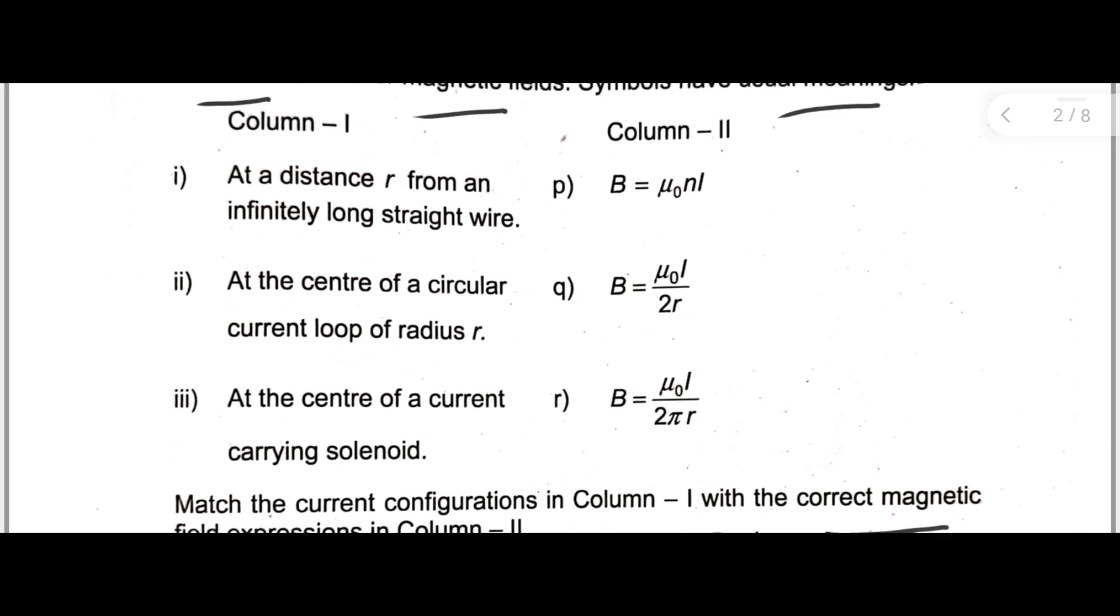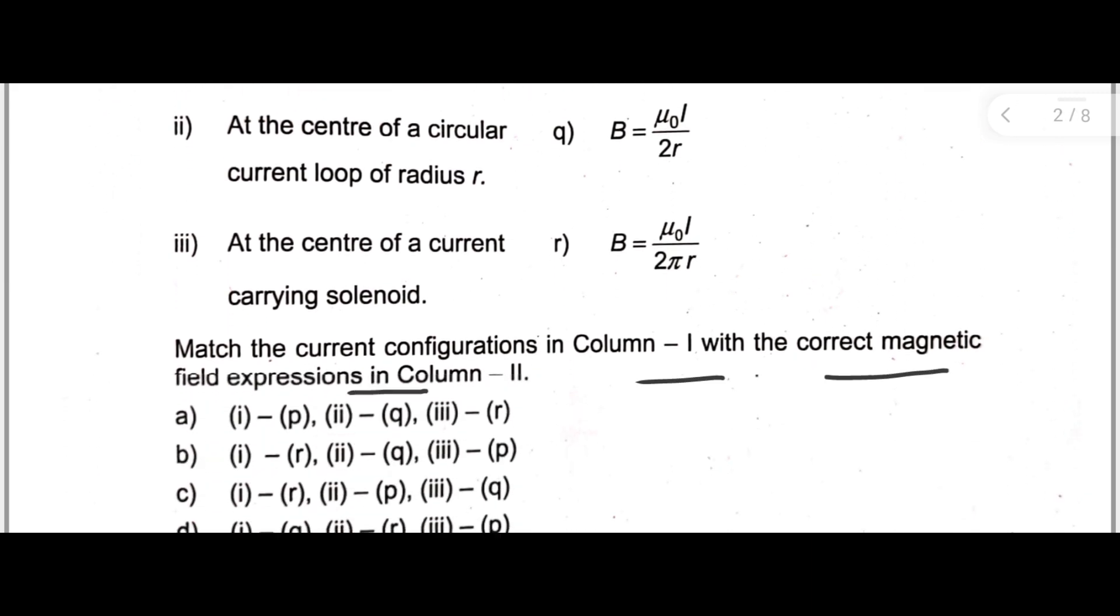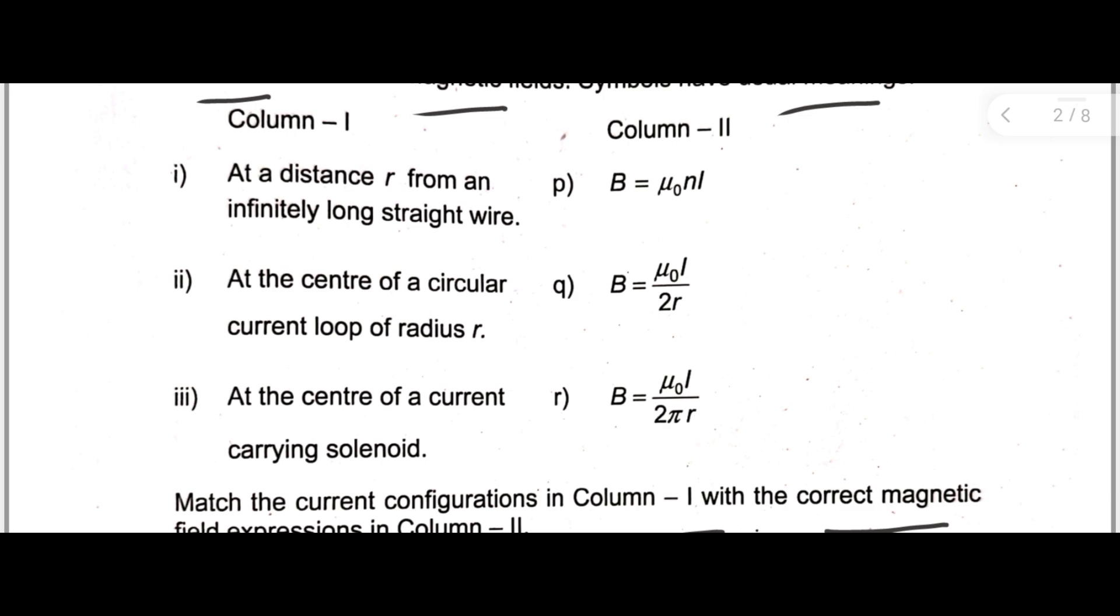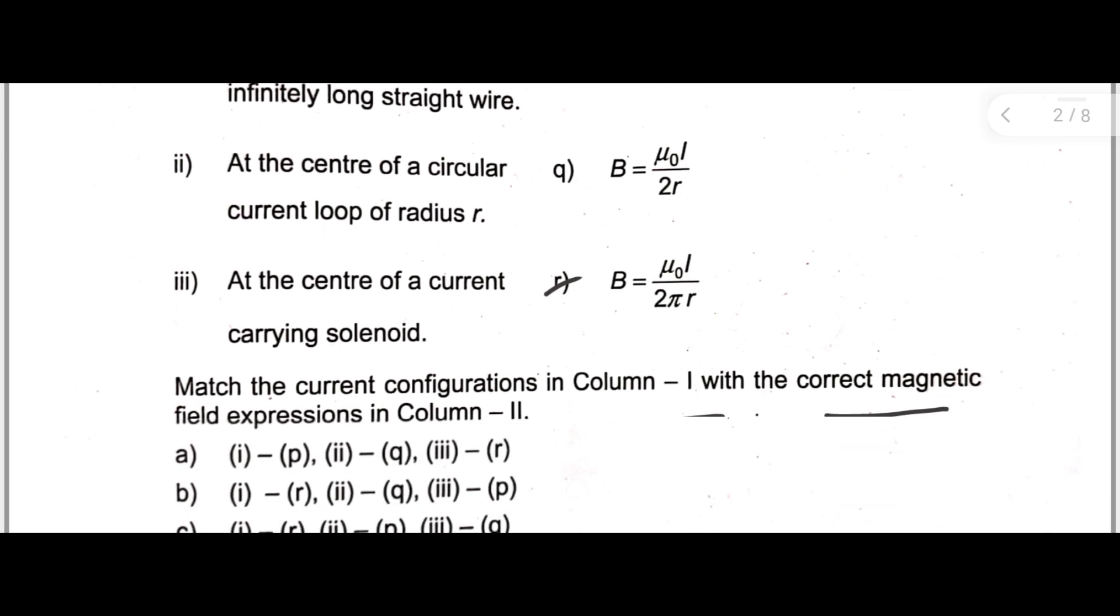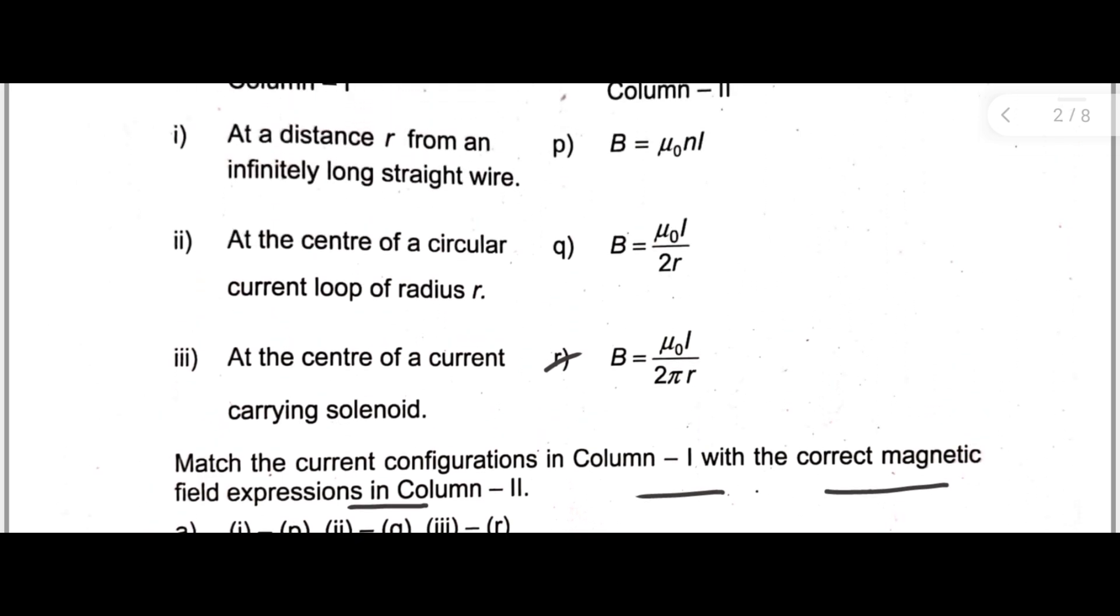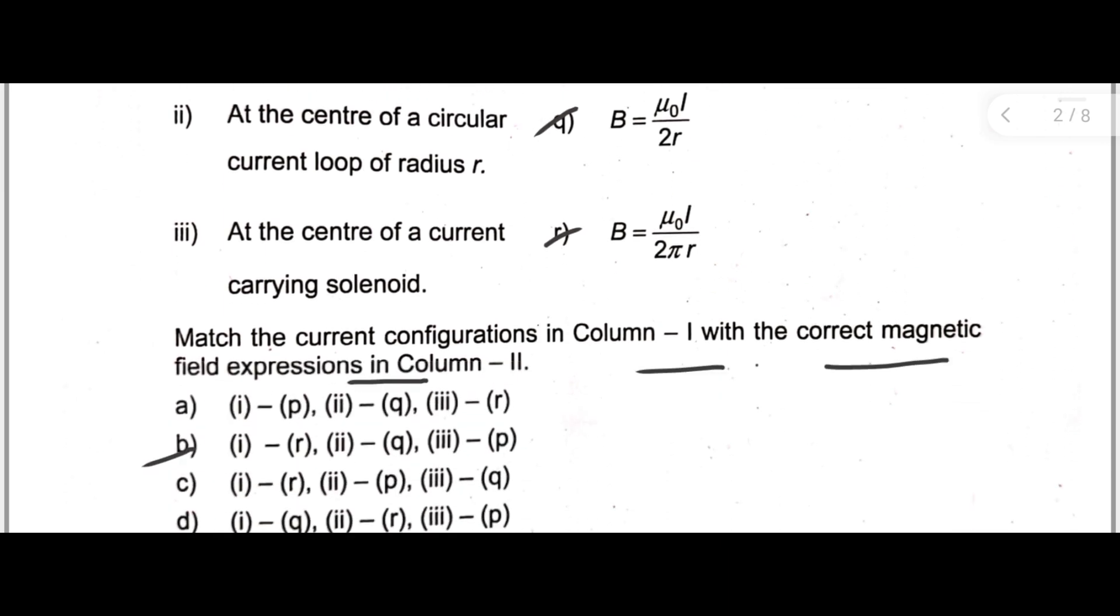Here the suitable answer is answer B, the second option. This is the correct one. The first one is r: at a distance small r from an infinitely long straight wire, B = μ₀I / 2πr. Next, the second one is q: at the center of a circular current loop of radius r, B = μ₀I / 2r. And the third one is p: at the center of current carrying solenoid, B = μ₀nI. So the correct answer is B.